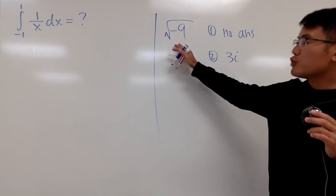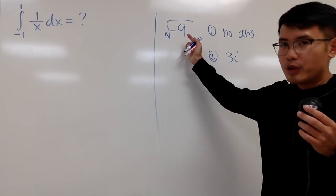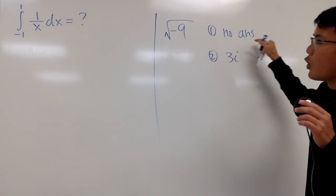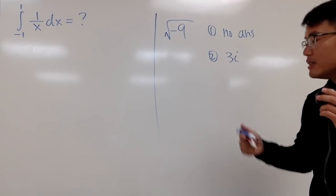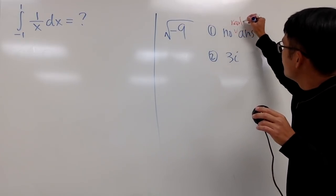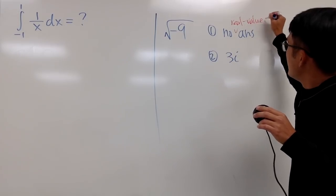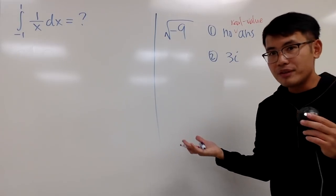If you are talking to a pre-algebra student, square root of negative 9, you should tell them that this has no answer. To be more precise, you can say it has no real valued answer. That's perfectly okay.